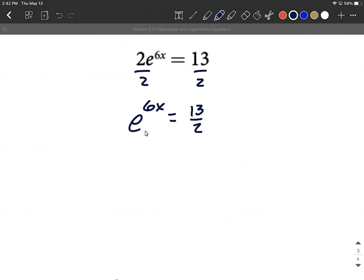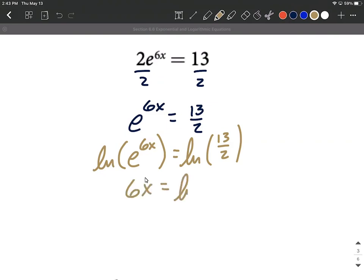With e as our base, and you'll get used to this, we want to apply a natural log to both sides. So the natural log means log base e. What's going to happen on the left-hand side is this is log base e, and we have e to a power. These are inverse functions of one another. So you get that very nice canceling out again. We get 6x equals the natural log of 13 over 2.